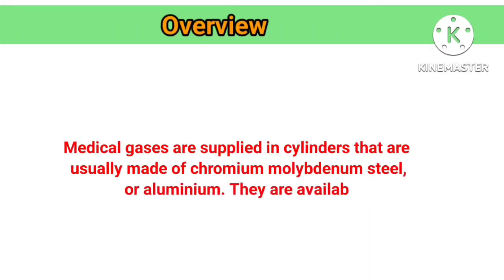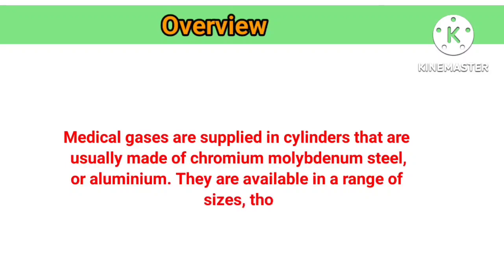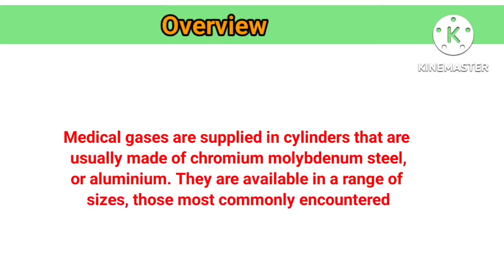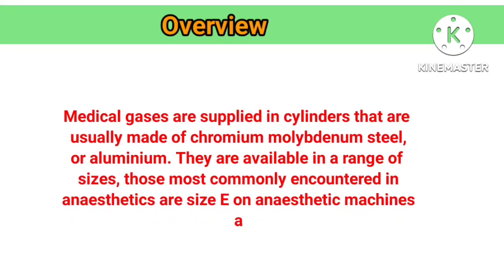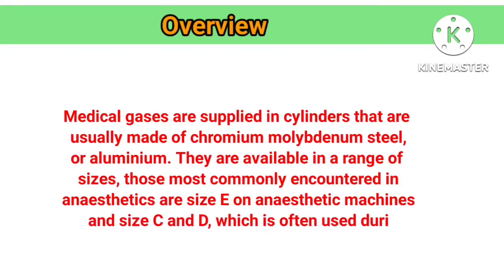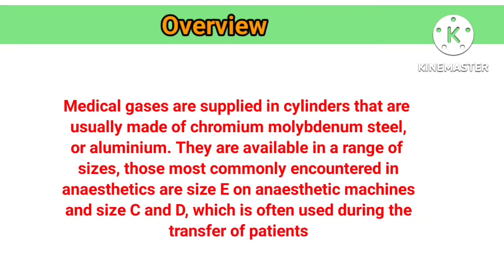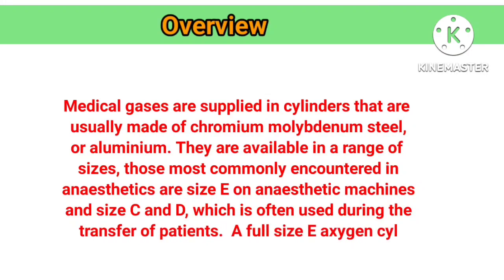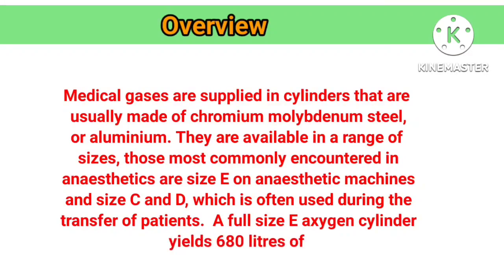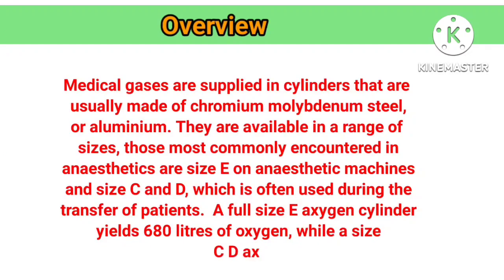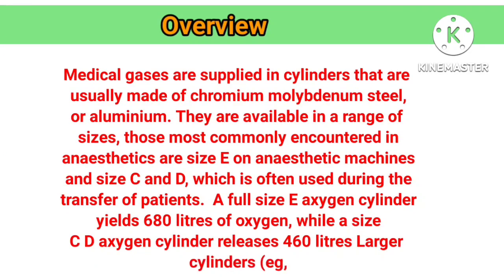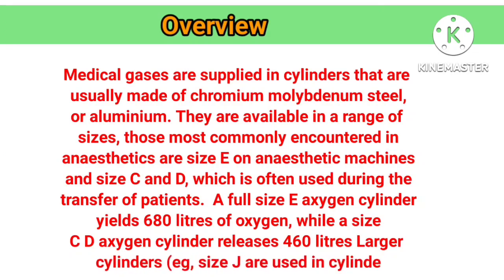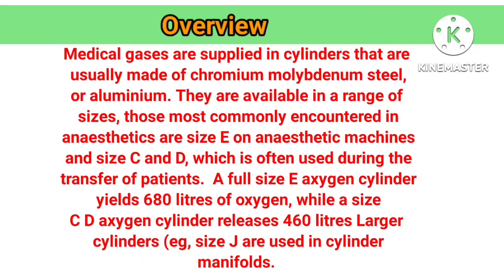They are available in a range of sizes. Those most commonly encountered in anesthetics are size E on anesthetic machines, and size C and D, which are often used during the transfer of patients. A full size E oxygen cylinder yields 680 liters of oxygen, while a size C and D oxygen cylinder releases 460 liters. Larger cylinders, for example size J, are used in cylinder manifolds.